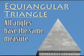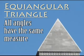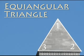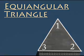Here we have an equiangular triangle, which means that all of the angles formed by the sides have the same measure. An equiangular triangle is also automatically an equilateral triangle.